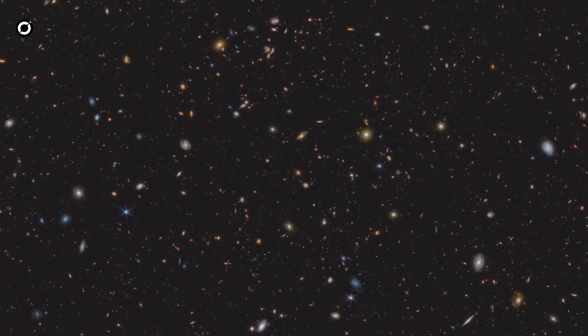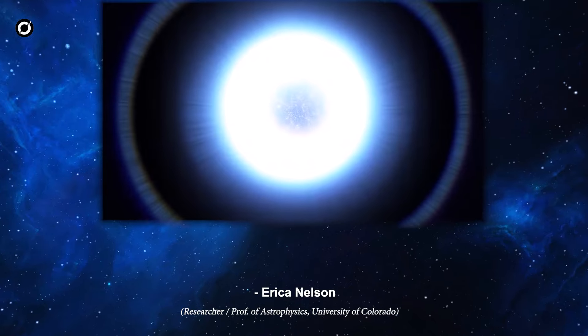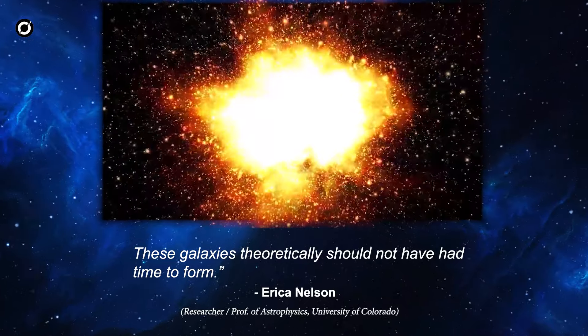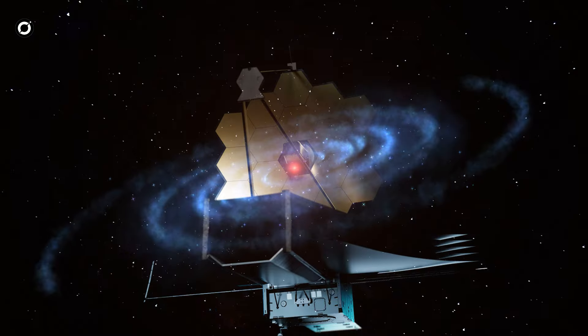Within this region were over 700 newly discovered young galaxies that revealed what the cosmos looked like in its earliest era. It is not expected that the early universe would be able to organize itself that quickly. These galaxies theoretically should not have had time to form.